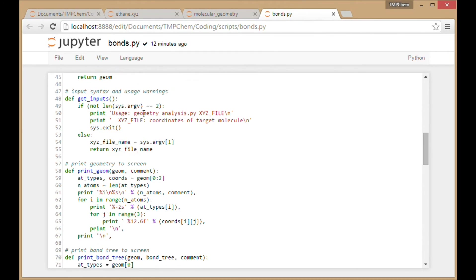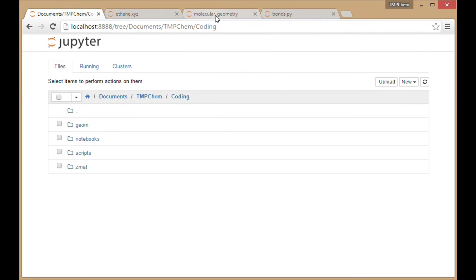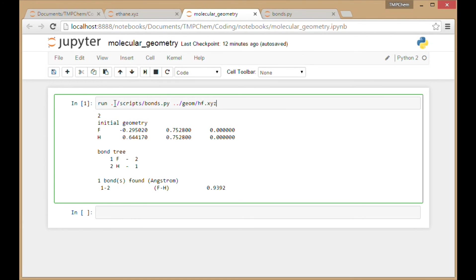Then I'm going to have an input where I say this file name. The bigger file that this is going to go into eventually is called Geometry Analysis, so it's going to be that Bonds.py. These double dots indicate going up a directory to this main directory, then to scripts, Bonds.py, geom, hf.xyz. This is executed for the hydrogen fluoride from the previous video.